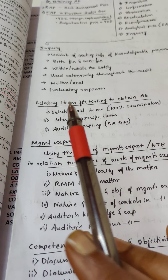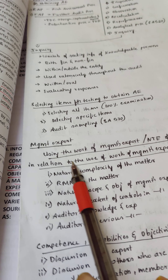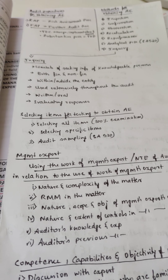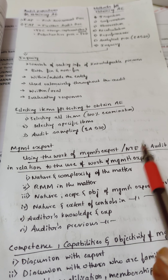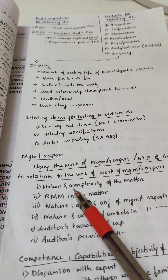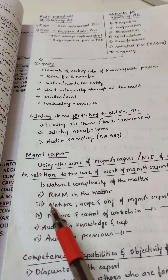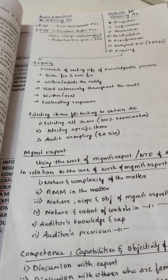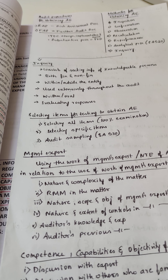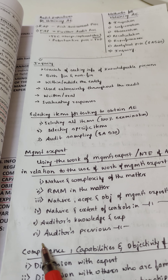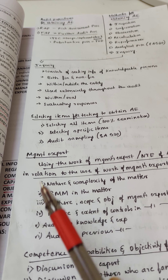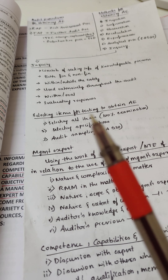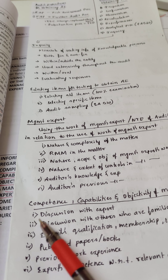An important topic in this ISA is the use of management's expert. The nature, time, and extent of audit procedures in relation to management's expert work depend on: the nature and complexity of the matter, the risk of material misstatement, the nature, scope, and objective of the management expert's work, the nature and extent of controls in the management expert's work, the auditor's knowledge and experience, and the auditor's previous experience with that expert.